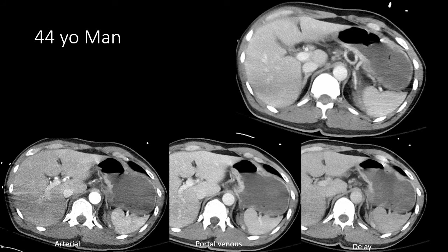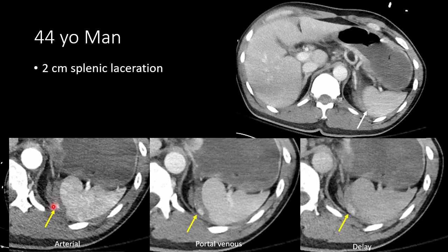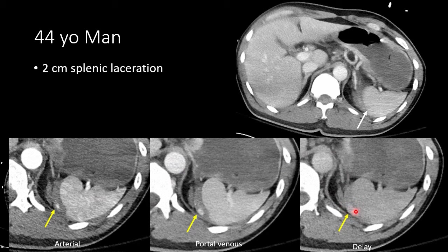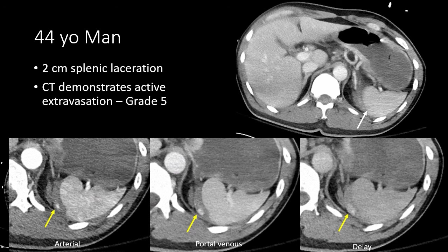Here we have a small 2-centimeter laceration of the spleen. On arterial phase, we can see a small focus of dense contrast in the region of that laceration, similar in density to the aorta. On the portal venous phase, that region of contrast has expanded and changed its size and shape — our first indication of active extravasation. On the delayed phase, that region continues to enlarge, maintaining density more than the aorta. This is consistent with active extravasation from a small laceration. Even though the laceration was 2 centimeters, the active extravasation into the peritoneal cavity results in a grade 5 injury.